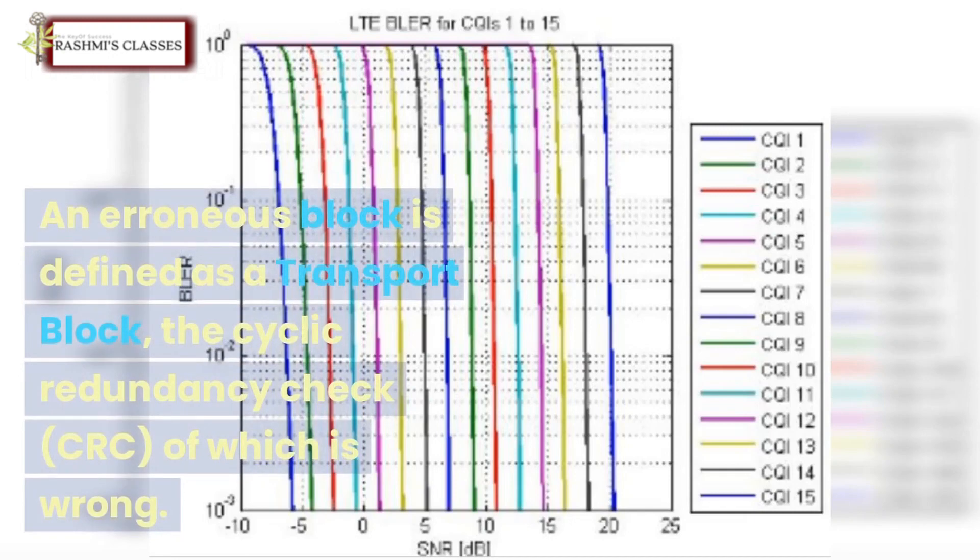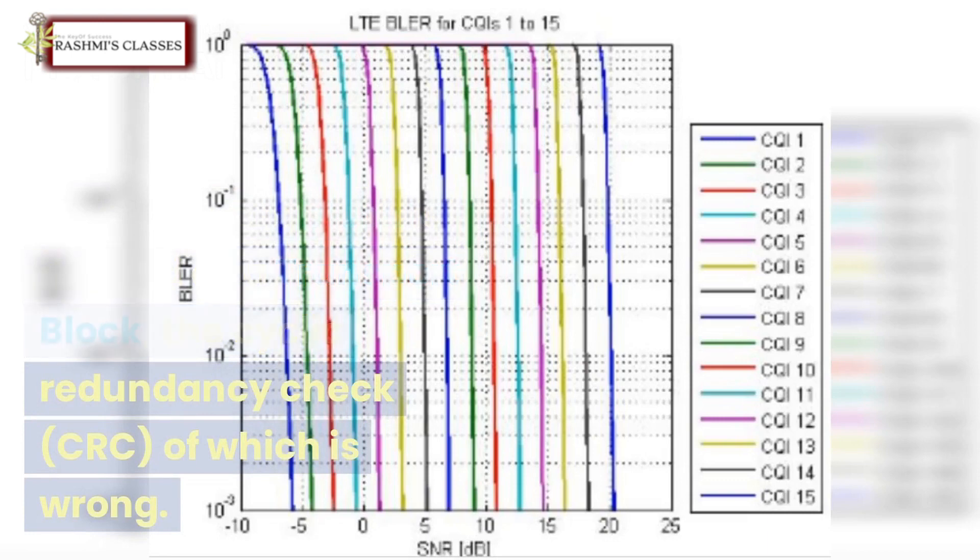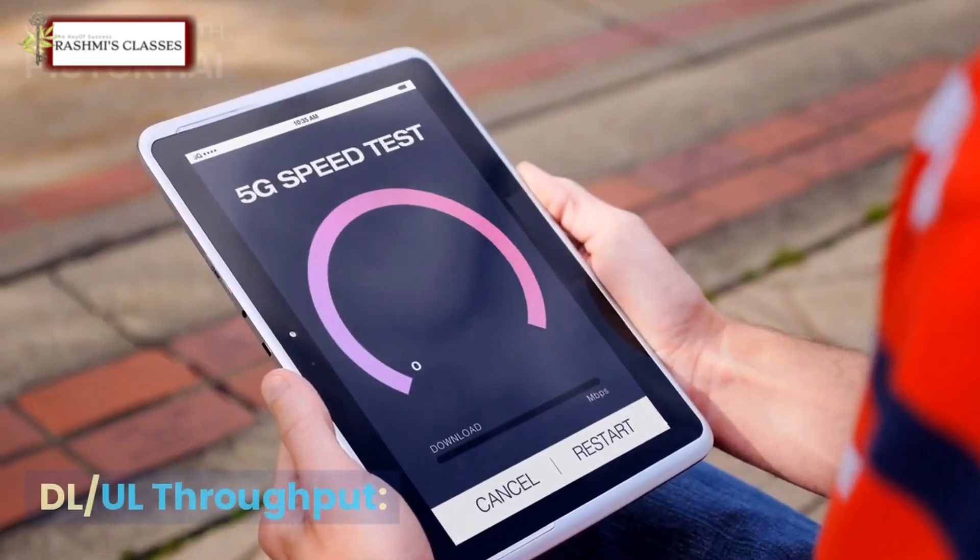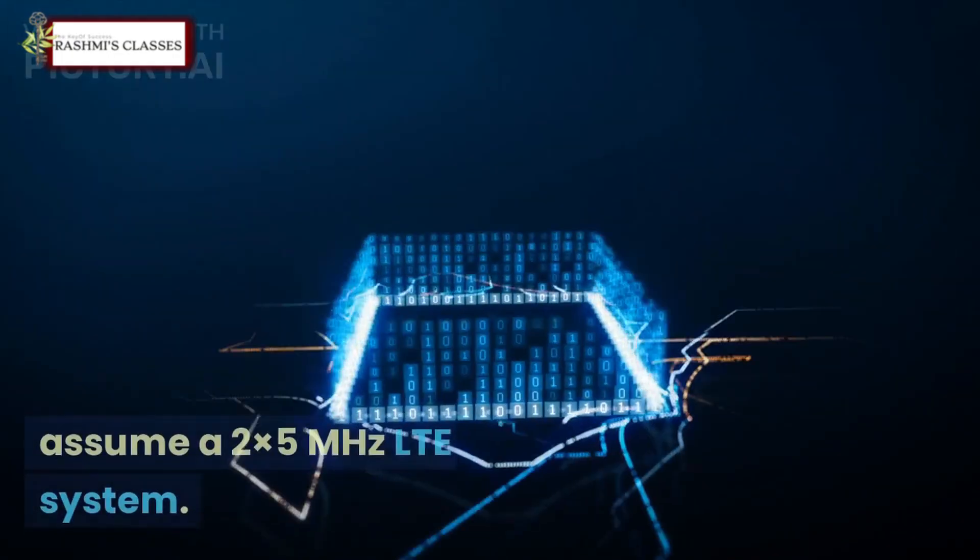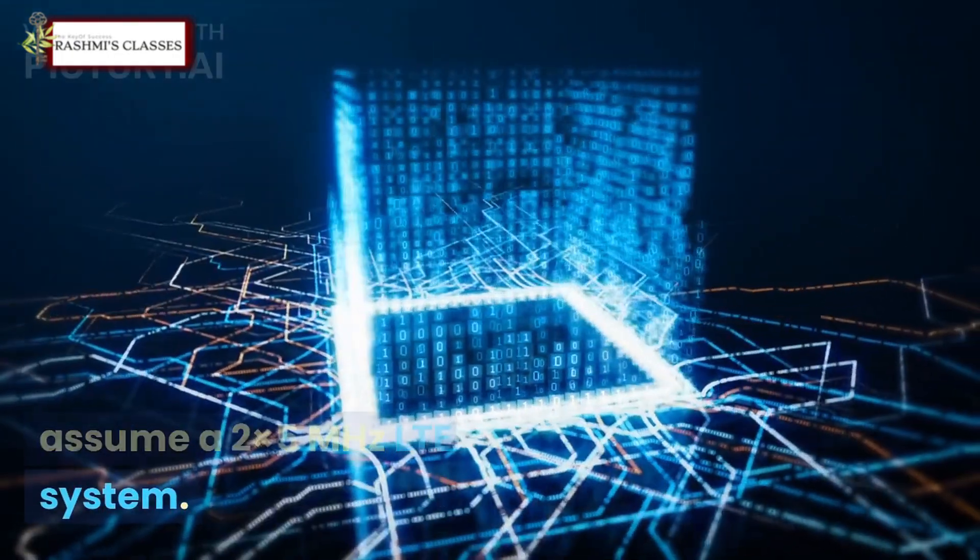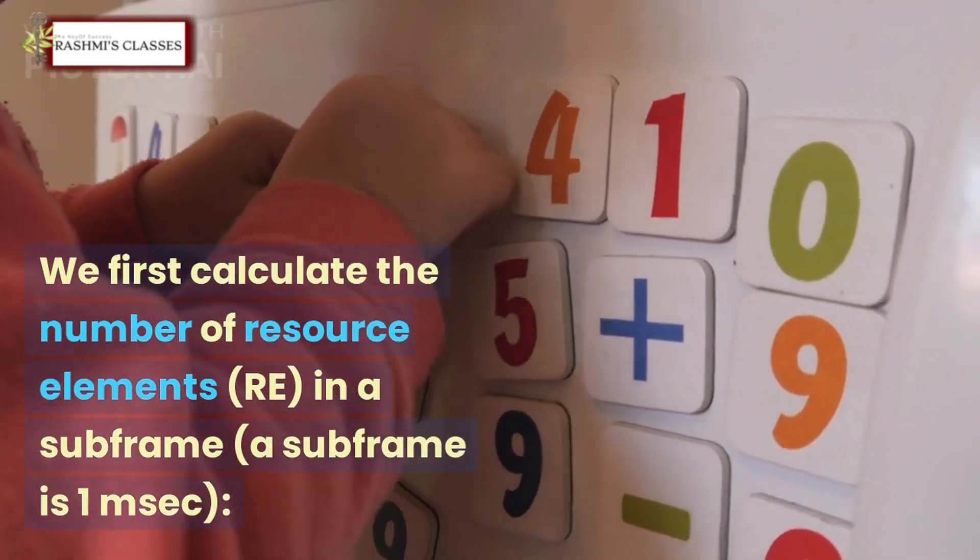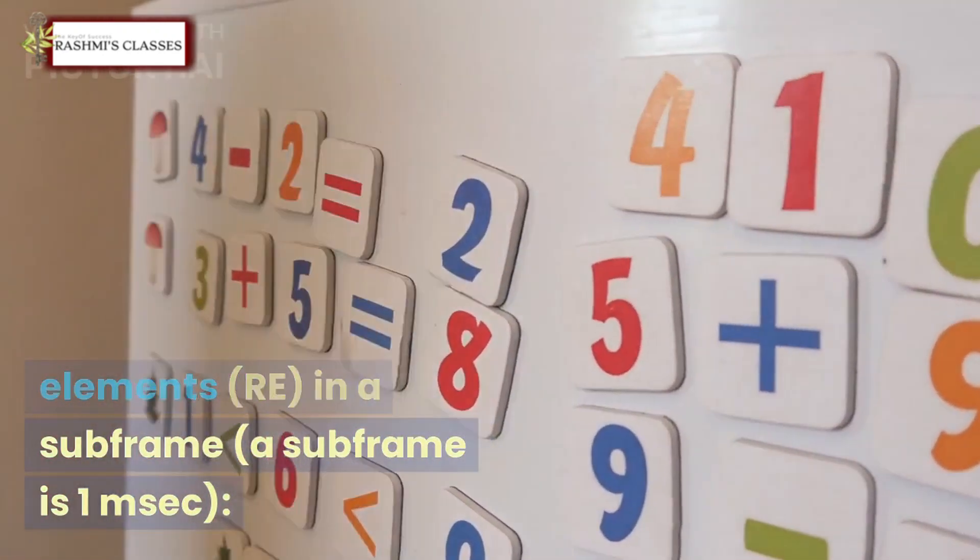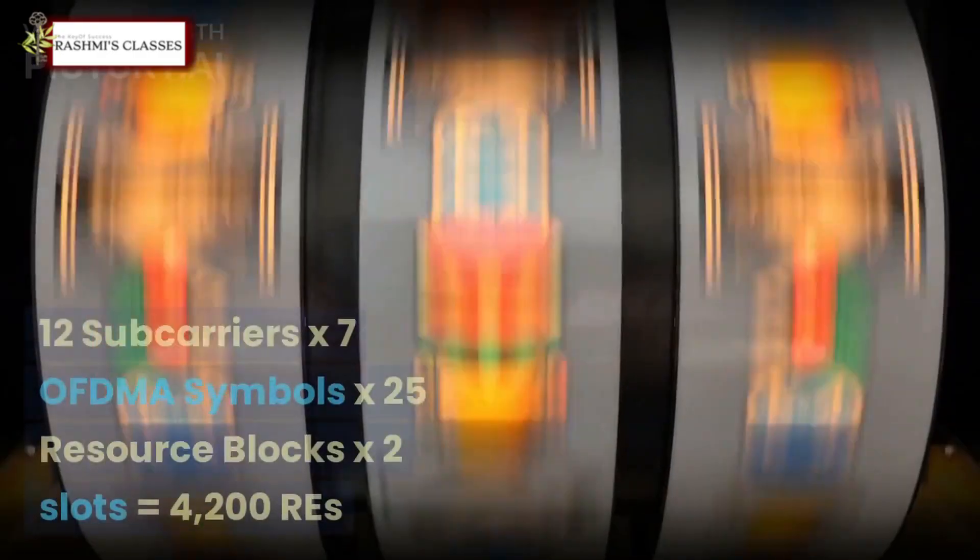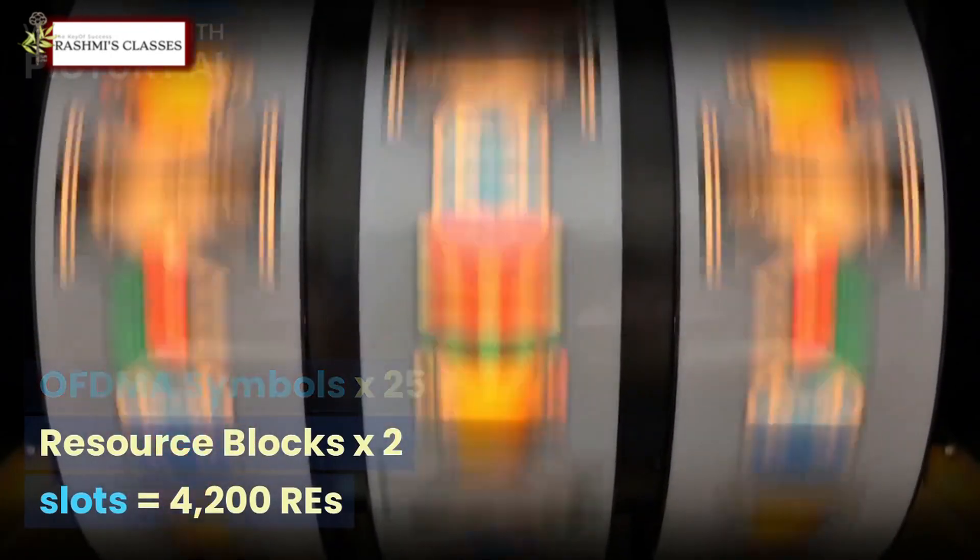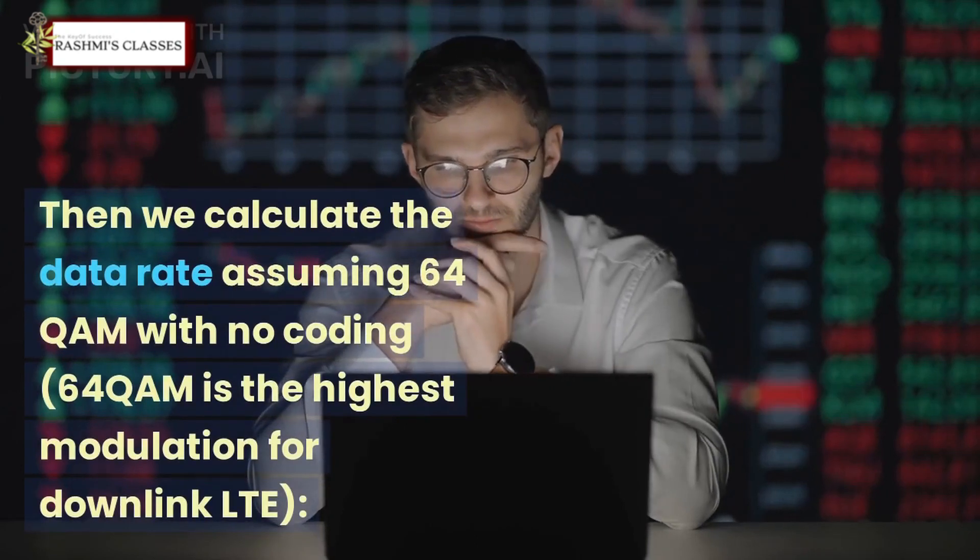8 & 9. DL/UL Throughput: Assume a 2x5 MHz LTE system. We first calculate the number of resource elements (RE) in a subframe. A subframe is one millisecond. 12 subcarriers x 7 OFDM symbols x 25 resource blocks x 2 slots = 4200 REs.